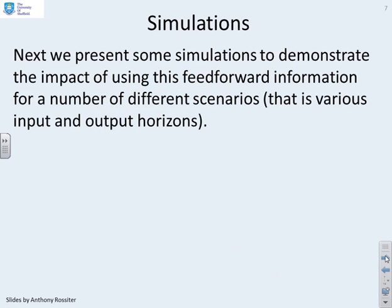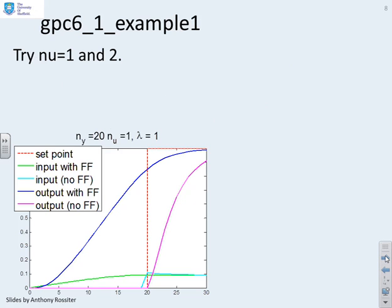We're going to present some simulations to demonstrate the impact of using this feedforward information for a number of different scenarios, with various input and output horizons. Here's the first example: gpc6_1_example1. These MATLAB files are on the Google site should you want to run them yourself.